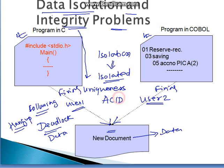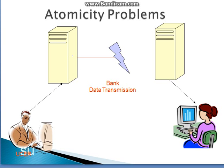This is one of the ACID properties of the database — A, C, I, and D. It is one of the ACID properties. The next problem is atomicity problems. What happens in atomicity problems involves a bank data transmission scenario.